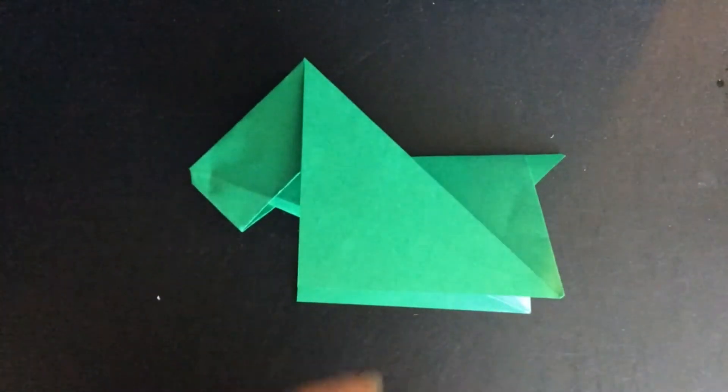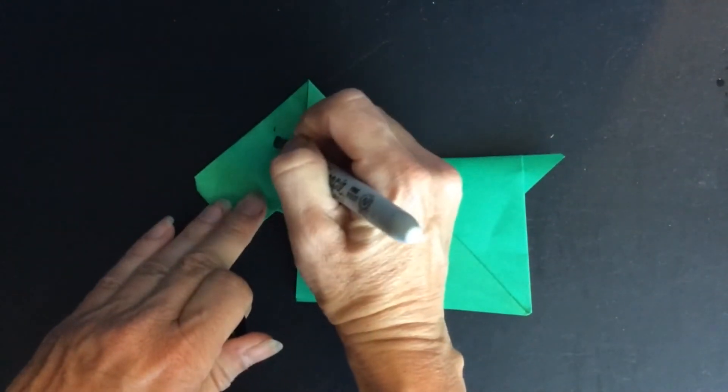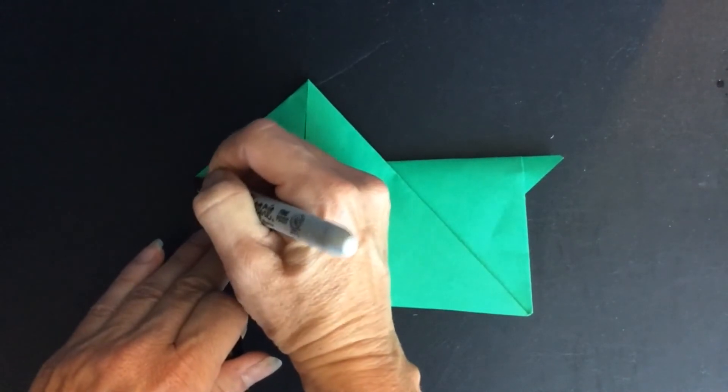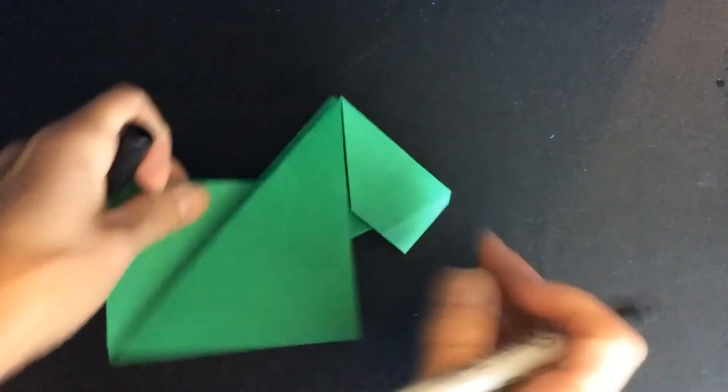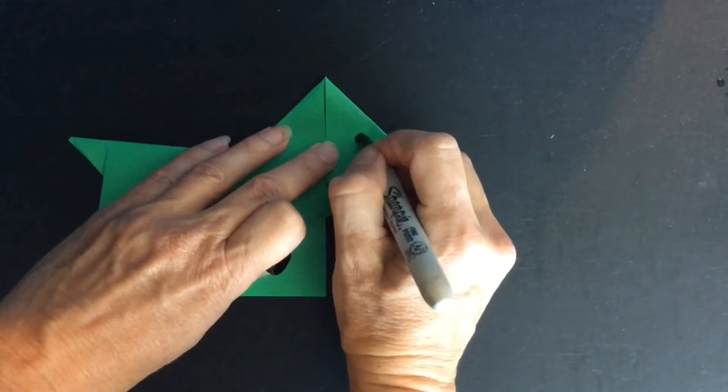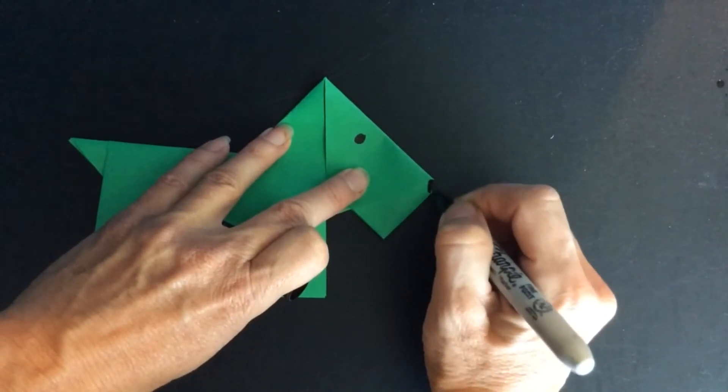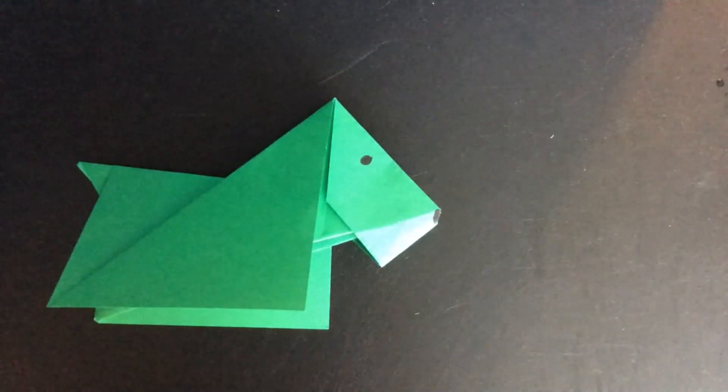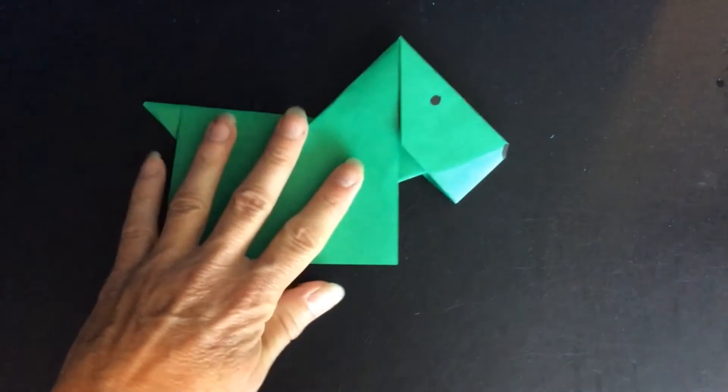And then you have your dog. Take the marker. And decorate. Now you have an origami dog.